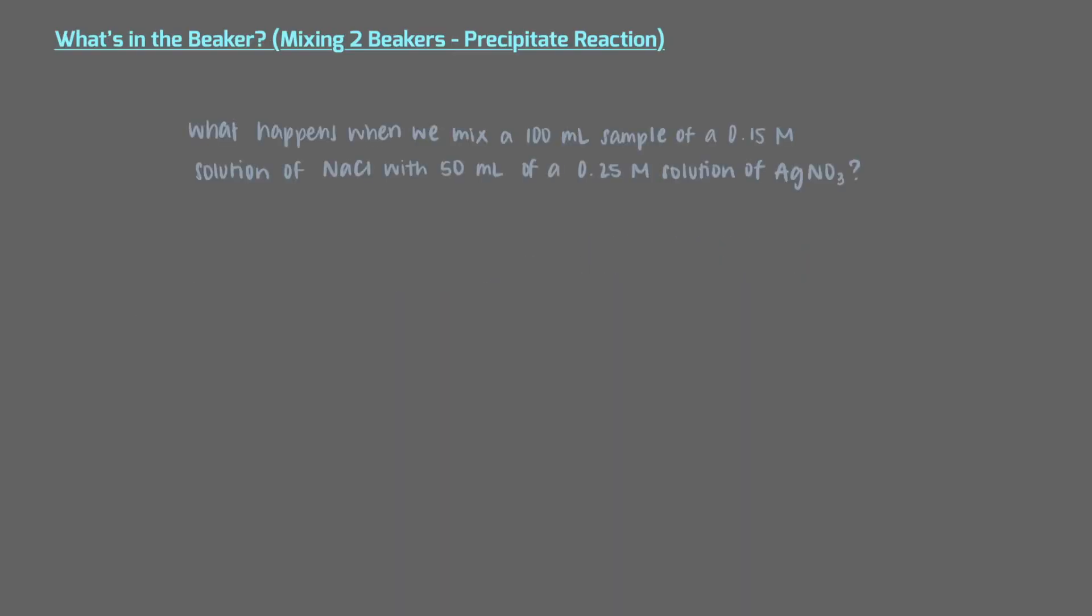What happens when we mix a 100 milliliter sample of a 0.15 molar solution of sodium chloride with 50 milliliters of a 0.25 molar solution of silver nitrate? It seems straightforward, but it's hiding a lot. Let's jump in.